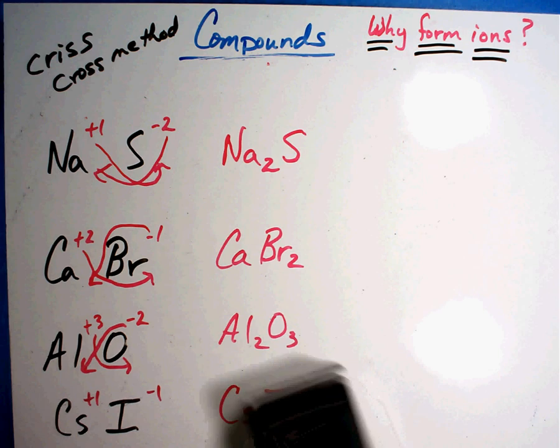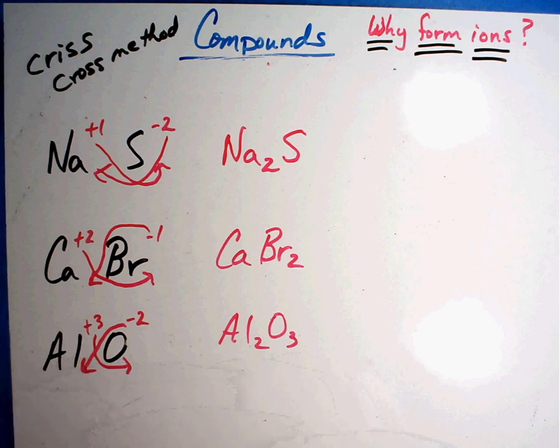If it doesn't equal, we'll just take that one out. If they don't equal, then you use the Criss Cross method.